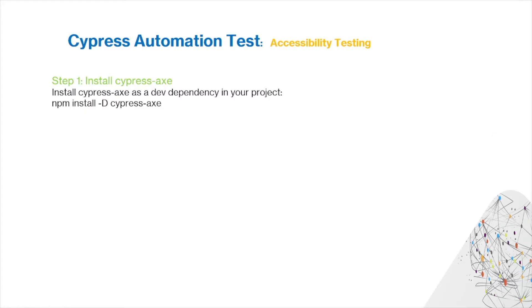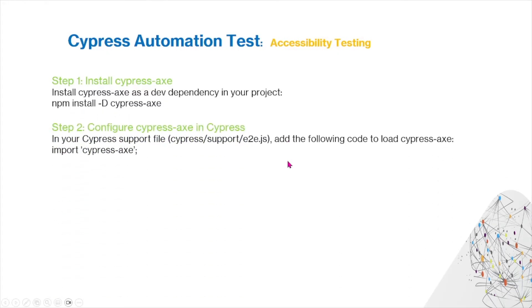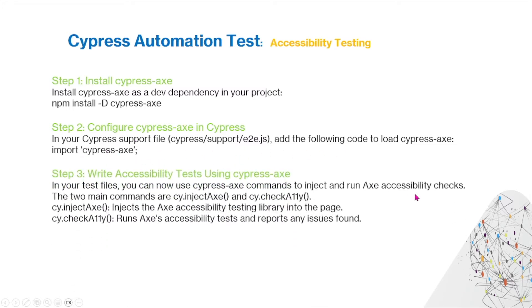Here are some tips for running accessibility testing. First, you have to install Cypress AXE as a dev dependency in your project using the install command. Second, you have to configure Cypress AXE by opening your support file and adding the required line of code. Third, you write accessibility tests using Cypress AXE commands to inject and run AXE accessibility checks. The two main commands are cy.injectAXE and cy.checkA11Y.